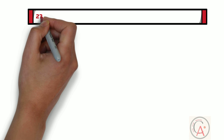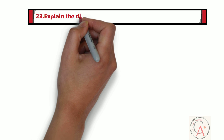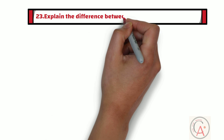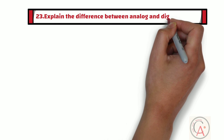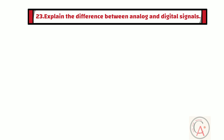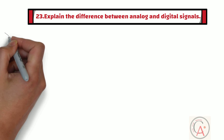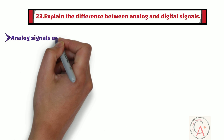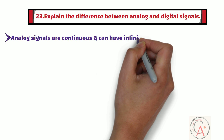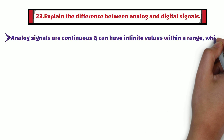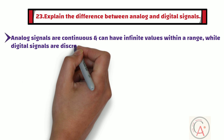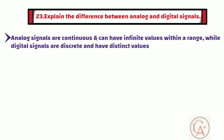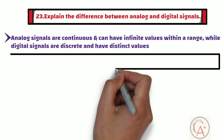The 23rd question is: explain the difference between analog and digital signals. Analog signals are continuous and can have infinite values within a range, while digital signals are discrete and have distinct values, typically zero or one.